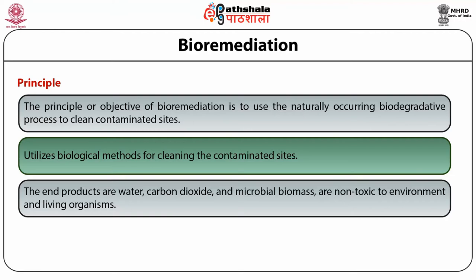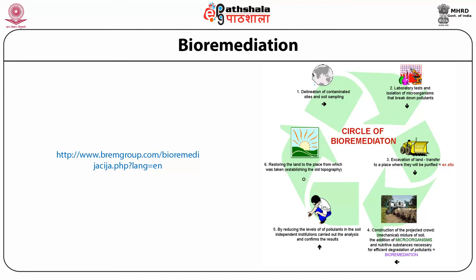The end products of bioremediation such as water, carbon dioxide and microbial biomass are non-toxic to the environment and living organisms. This picture shows the circle of bioremediation, which starts from the delineation of contaminated sites and soil sampling, then laboratory tests and isolation of microorganisms that break down the pollutants. Then excavation of the land and transfer to a place where they will be purified — this method comes under ex-situ remediation.